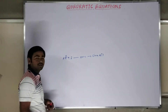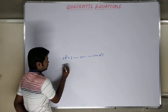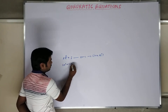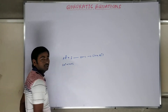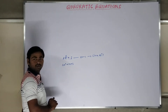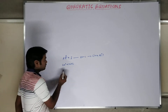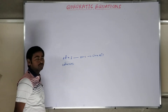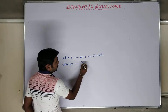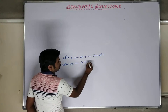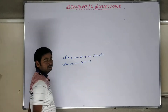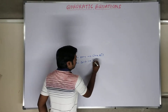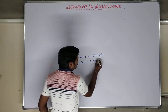Let us take a second equation: 3x² plus 2x plus 3. The highest power of the variable in the given equation — the degree of the equation is 2. Whenever the degree of the equation is 2, the equation is called a quadratic equation.